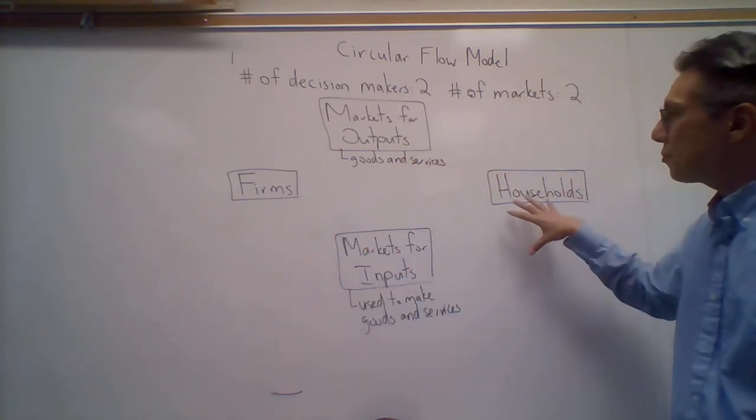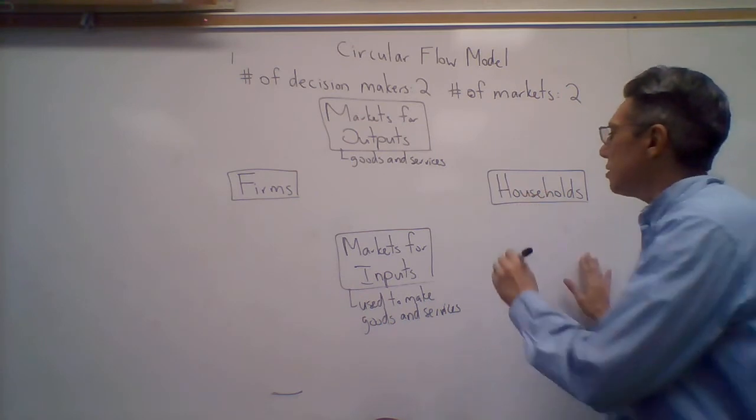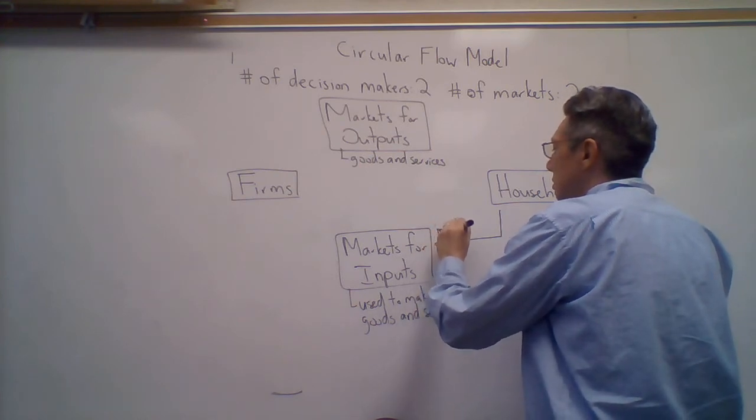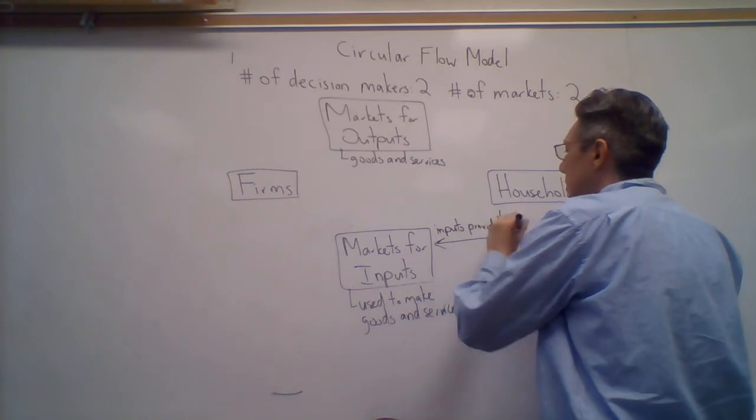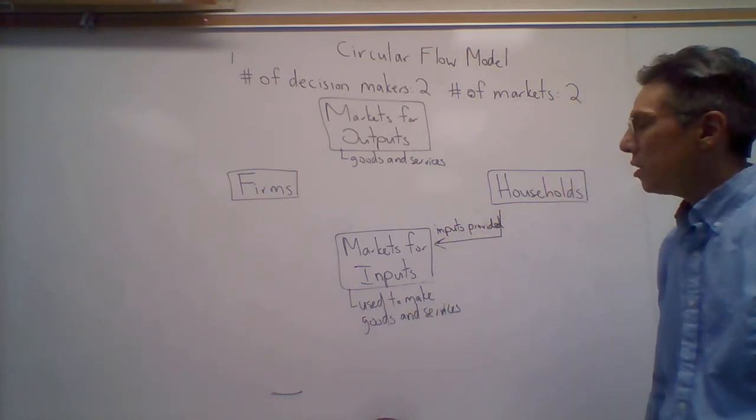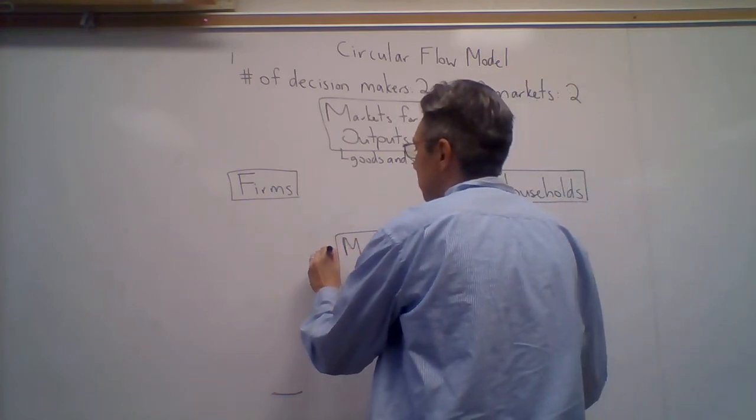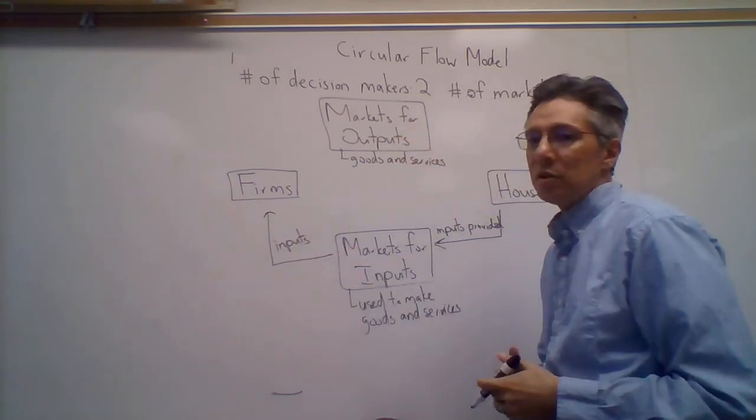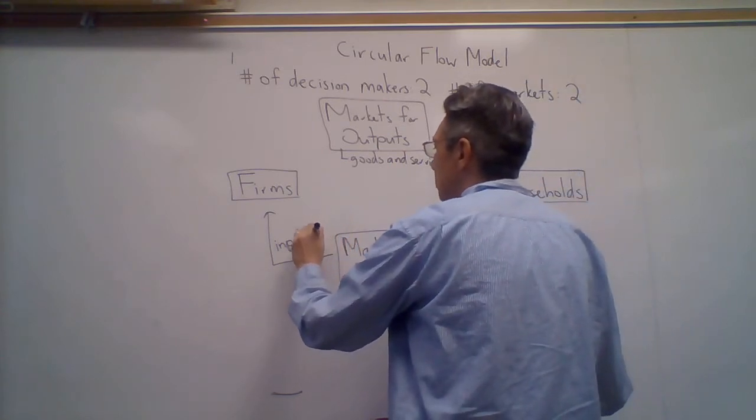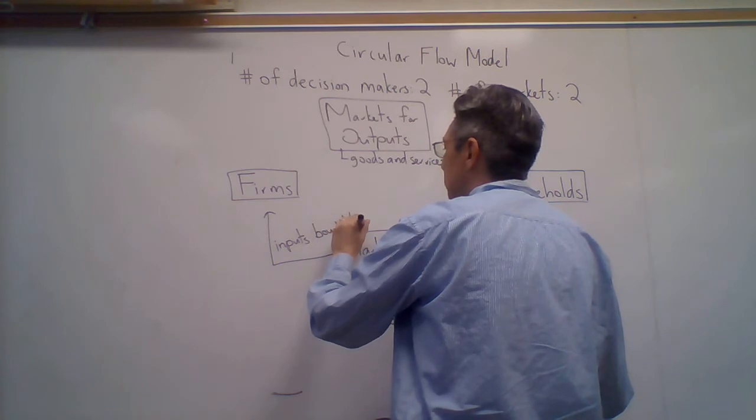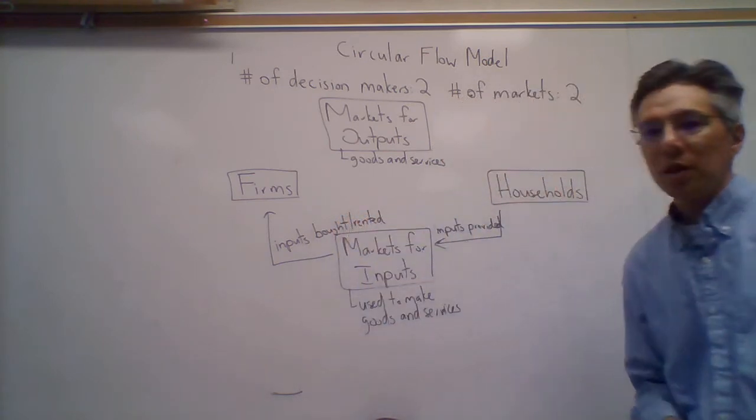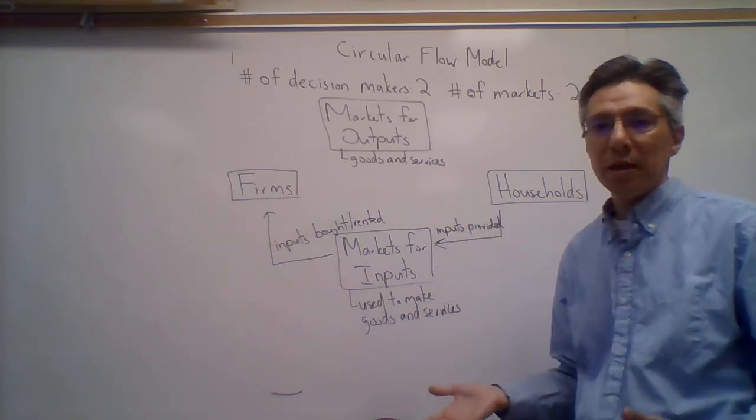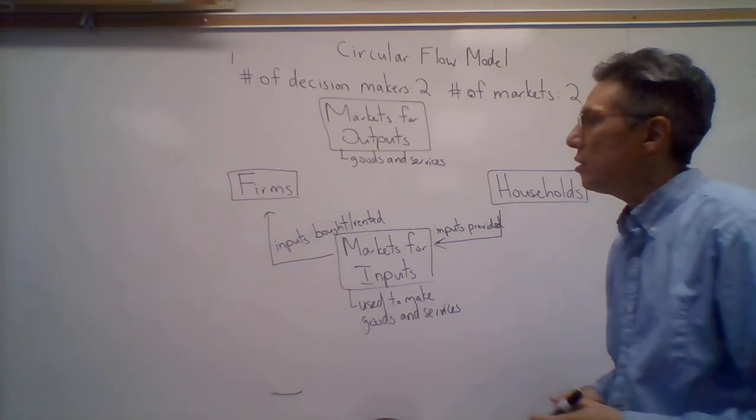According to this model, the inputs are provided by households into these markets. Then the firms buy or rent the inputs. What do the firms do with these inputs? What do they do with things like labor and equipment? They basically turn them into outputs.